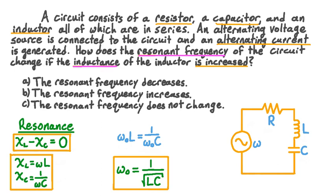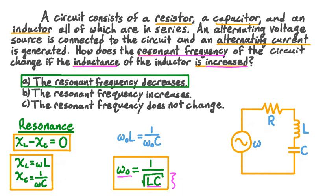As inductance is increased, the square root of inductance times capacitance is increased, so the denominator of our fraction gets larger, which means the overall fraction — the resonant frequency — gets smaller. So as the inductance of the inductor increases, the resonant frequency decreases. Interestingly, the resonant frequency would also decrease if we increase the capacitance, but changing the resistance of the resistor would not affect the resonant frequency.